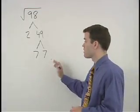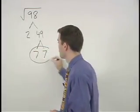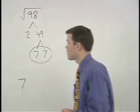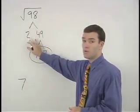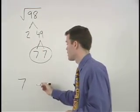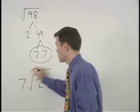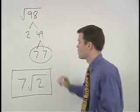So here since our 7's pair up, a 7 will come out of the radical. Since the 2 does not pair up, it stays inside the radical. And our answer is 7 root 2.